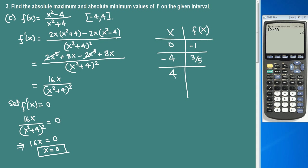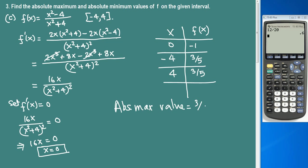Plugging in x = 4: similarly, 4 squared is 16, giving 12 over 20, which is also 3 fifths. So the absolute maximum value is 3 fifths — occurring at both x = negative 4 and x = 4 — and the absolute minimum value is negative 1.